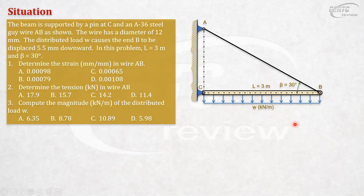The questions are: first, the strain of wire AB — strain is deformation divided by length, simple strain. Second, the tension in the wire. And third, the magnitude of the distributed load W in kilonewton per linear meter.